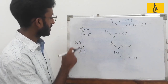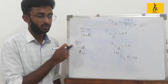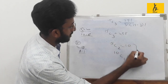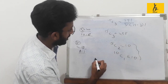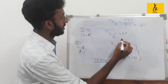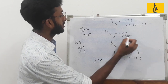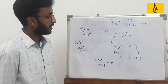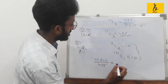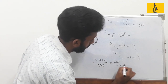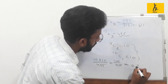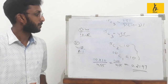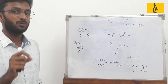Now we are going to calculate the probability for this question. This is the possibility using the combination. We calculate the numerator: 5C2 into 10C1, divided by 15C3, which gives approximately 100 divided by 455, equal to 0.2195.